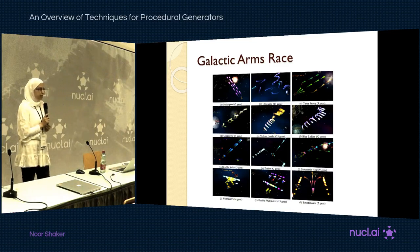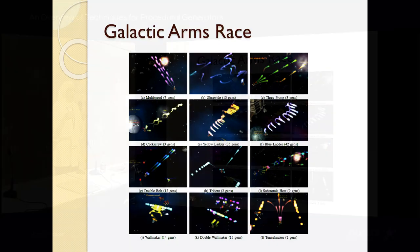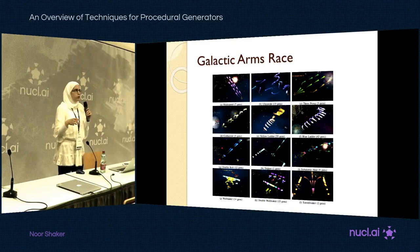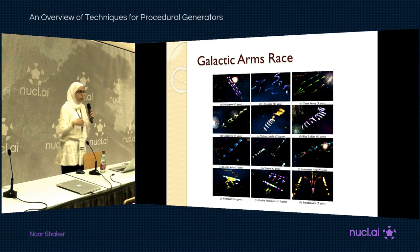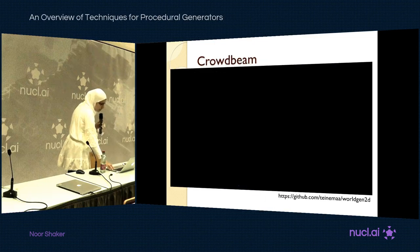The first example is Galactic Arms Race, a very popular game in academia that started as a research project and is now commercially available. It's a space shooter that detects player behavior and generates different types of weapons accordingly. As you play and choose weapons, the game evolves new weapon types based on your preferences, resulting in personalized, novel weapons tailored to your behavior.